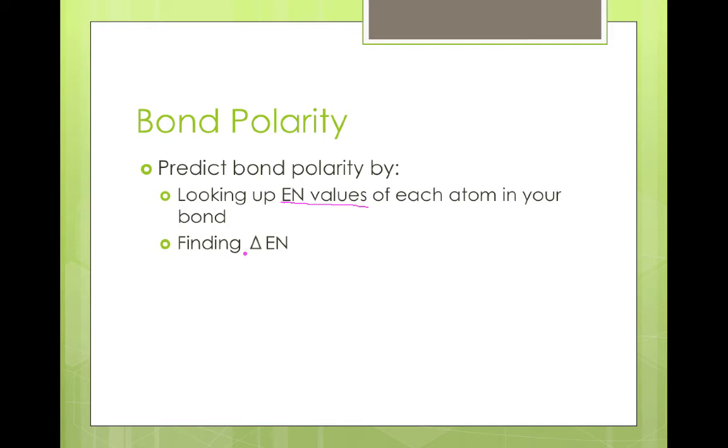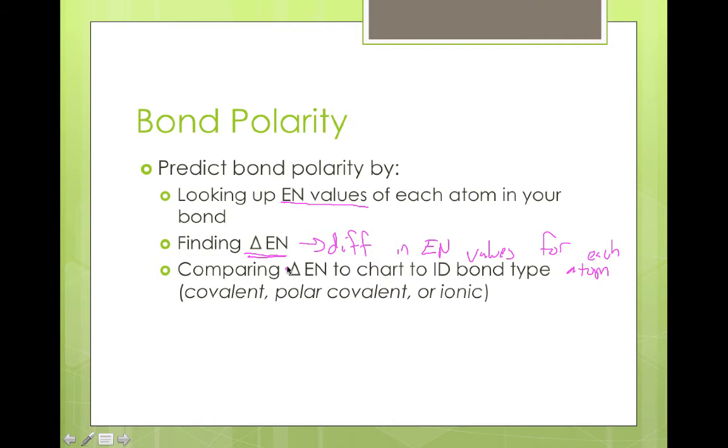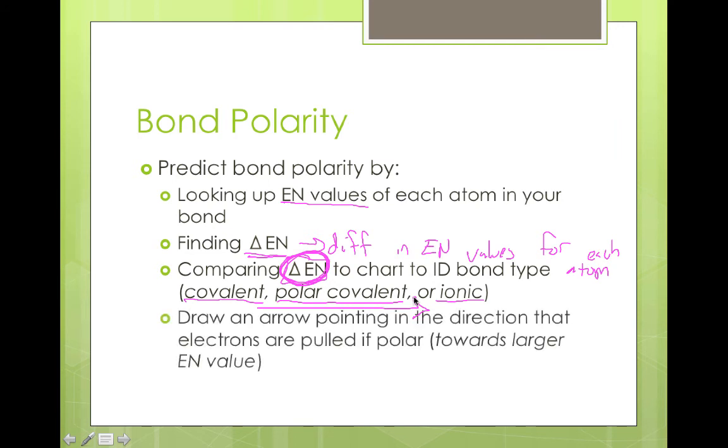You're going to then calculate delta electronegativity. This is going to be the difference in the electronegativity values for each atom. Doesn't matter which direction you go, I typically try to set it up so that I get positive answers, but we only want to know how different those two electronegativities are. We're going to compare our value for delta EN to a chart that's going to identify the type of bond we're dealing with. It's either going to be a non-polar covalent bond, a polar covalent bond, or an ionic bond depending on how big this value of delta EN is. Last but not least we're going to draw an arrow that is pointing in the direction that the electrons are being pulled. This is going to denote the polarity and it's going to denote a force vector acting on those actual electrons.